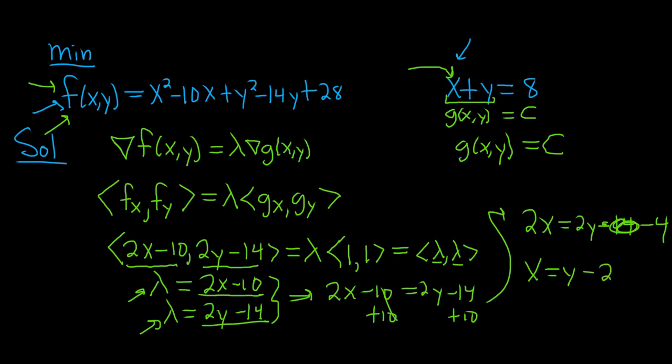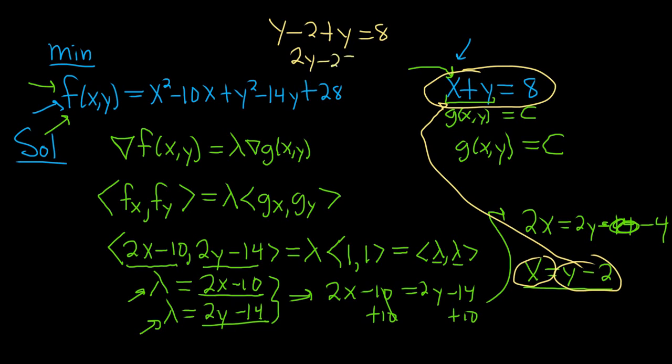We've reached a sticking point, so now you typically go to your constraint. Our constraint was x + y = 8. So x is y - 2, plus y equals 8. Just replace x with y - 2. Then we have 2y - 2 = 8, adding 2 gives us 2y = 10, and dividing by 2 gives y = 5.